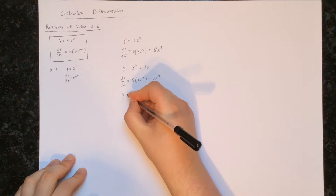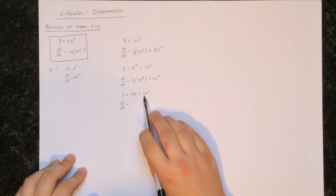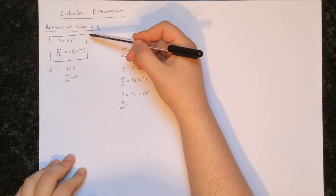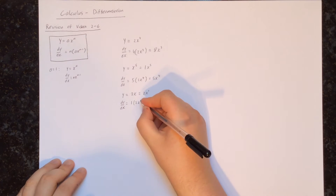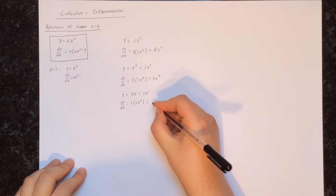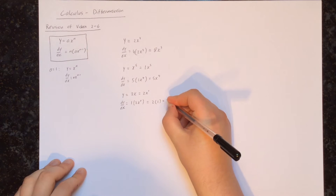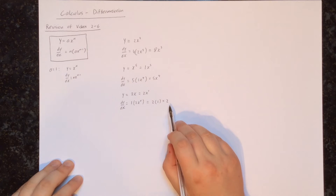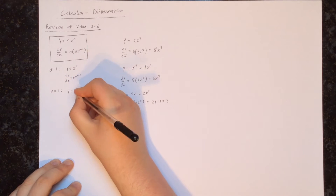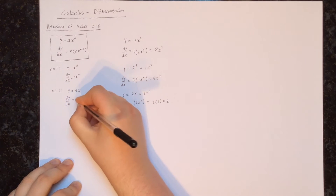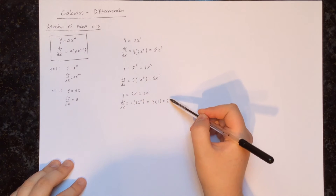Next, let's find the derivative of 2 times x. That's the same as 2 times x to the power of 1. Applying the formula, we multiply by the power which is 1, giving 1 times 2x to the power of 0. Now 1 times 2 is 2, and x to the power of 0 is always 1, so the derivative of 2x is just 2. In general, if y equals ax, the derivative will just equal a — the number in front of x.